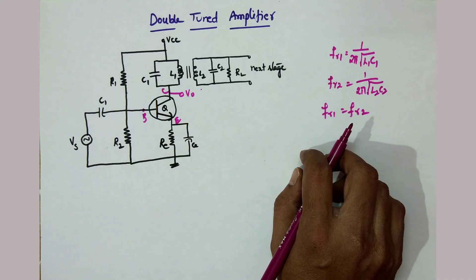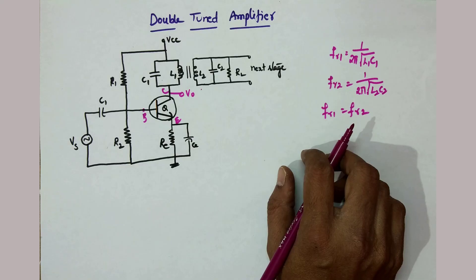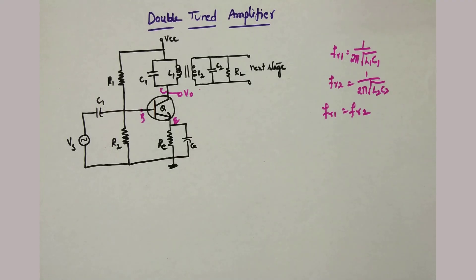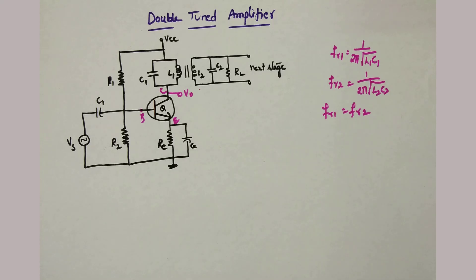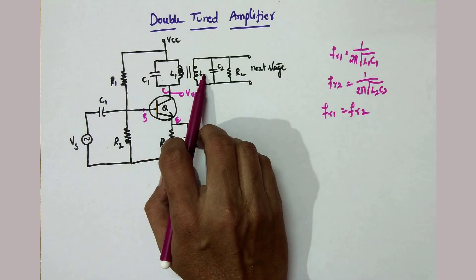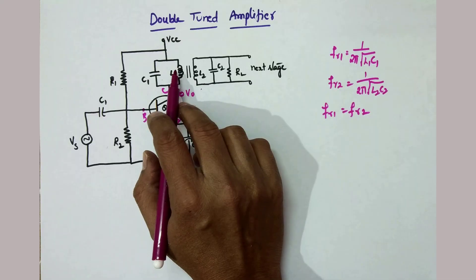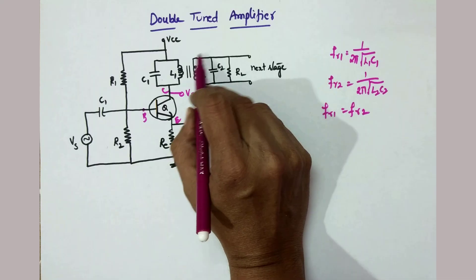The main advantage of the double tuned amplifier is that it gives a broader bandwidth compared to the single tuned capacitive coupled amplifier. The advantage of having a large bandwidth is that we can pass a broad range of frequencies while rejecting all other unwanted frequencies. The voltage gets induced in the tank circuit because of mutual inductance, or we can say because of the coupling between the two inductors. The frequency response — that is, gain versus frequency — of the double tuned amplifier completely depends on this coupling.